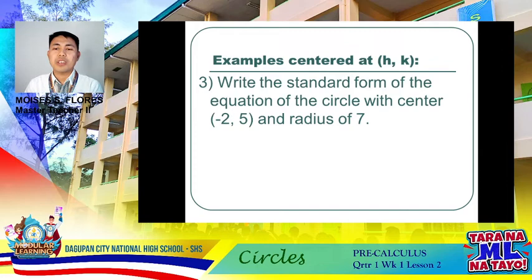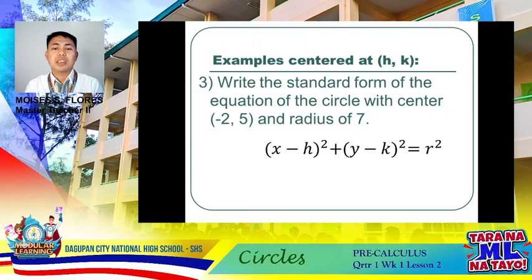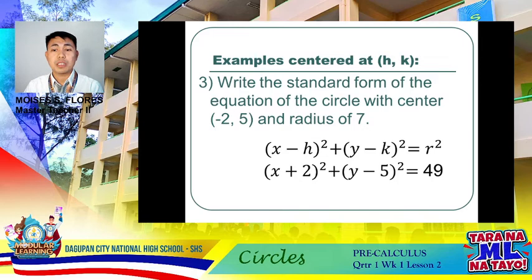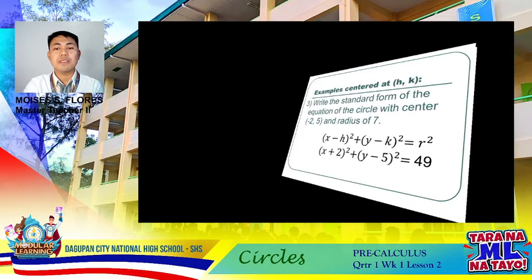Now, how about centered at (h, k)? Write the standard form of the equation of a circle with center at (−2, 5) and a radius of 7. Substituting into (x − h)² + (y − k)² = R², we get (x + 2)² + (y − 5)² = 49. The x-term becomes positive 2 because negative times negative is positive, and 7² = 49.